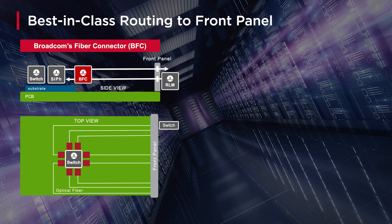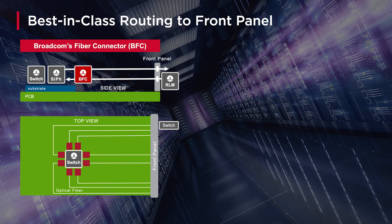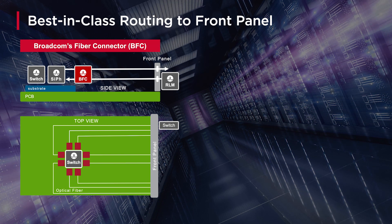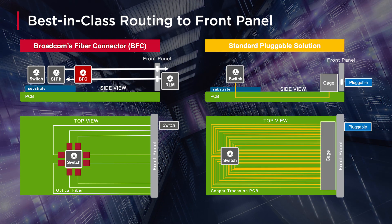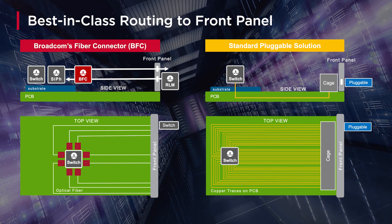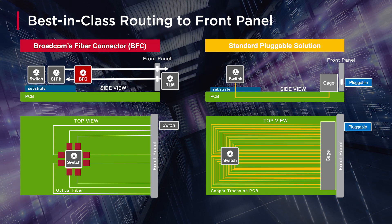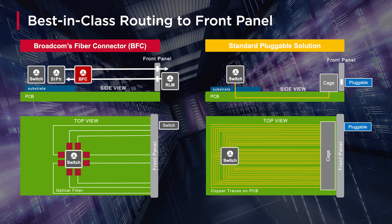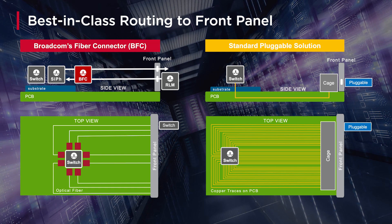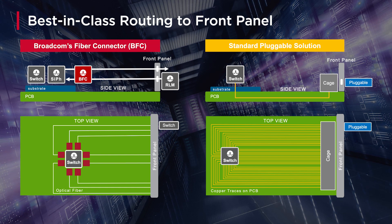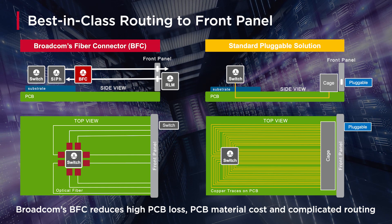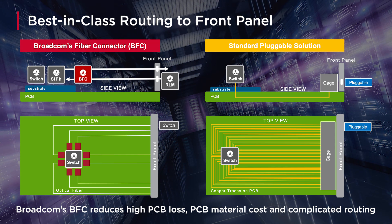For Broadcom's CPO designs, the BFC enables lossless routing from the switch to the front panel, simplifying design for the lowest cost and best performance. For standard pluggable solutions, routing from the switch to the front panel is done through the PCB via copper traces. As data rates continue to increase, higher performance, higher cost PCB materials, flyover cables, and even re-timers are needed to meet loss budget requirements. The use of a CPO switch with the BFC eliminates the complex, high cost, and high power routing needed for current solutions.